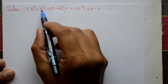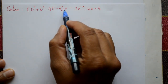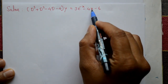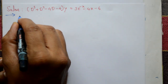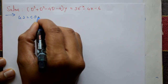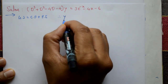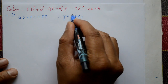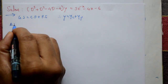Solve (D³ + D² - 4D - 4)y = 3e^(-x) - 4x - 6. Find the general solution. The general solution is complementary function plus particular integral, that means y = yc + yp. First, the complementary function is required.